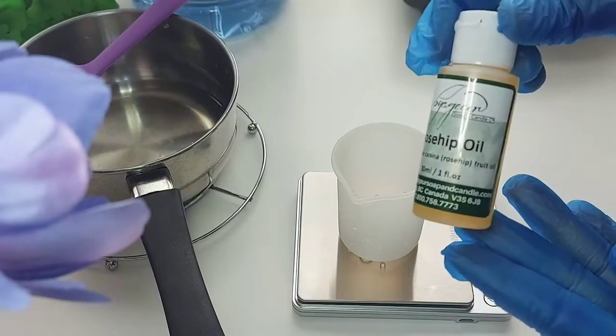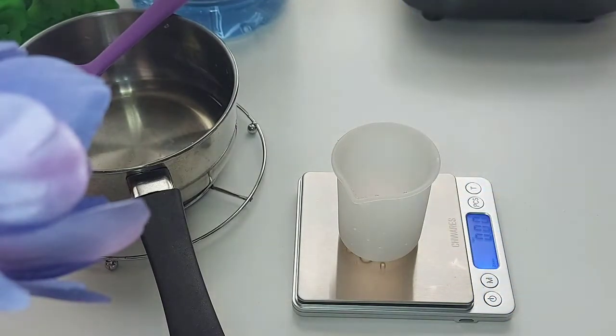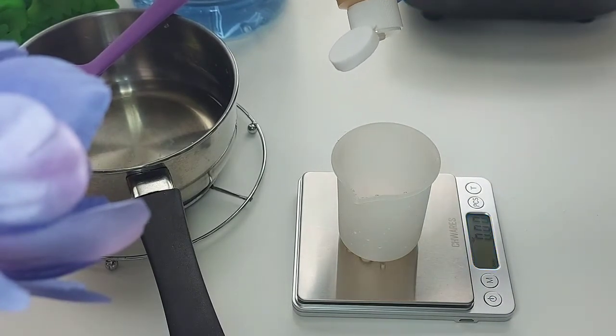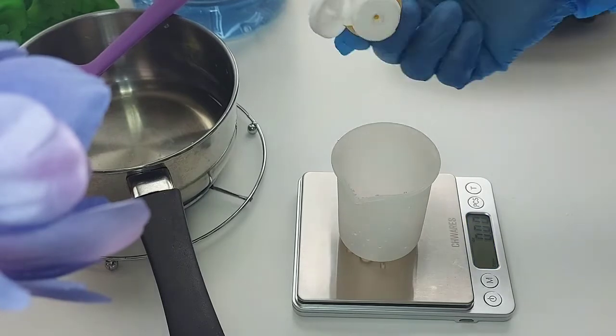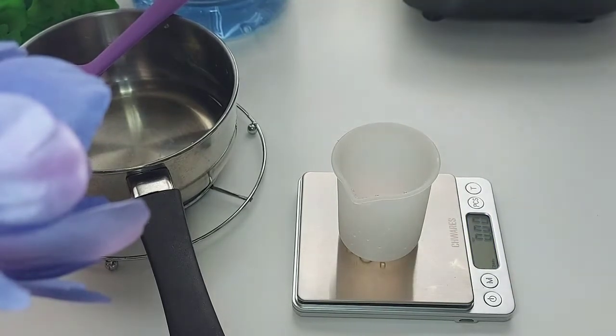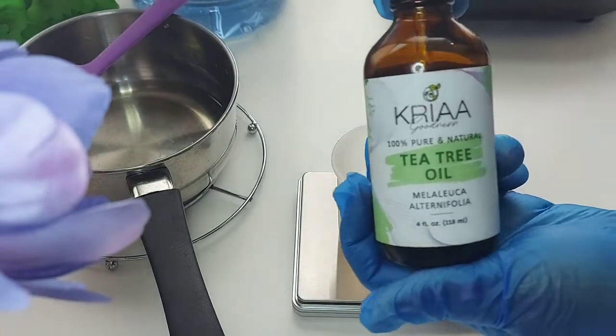Now we're going to add our secret ingredient, rosehip oil. This oil is so beautiful. It hydrates, moisturizes, helps to exfoliate and brighten dark spots, and boosts collagen formation, all the things you need for healthy skin.